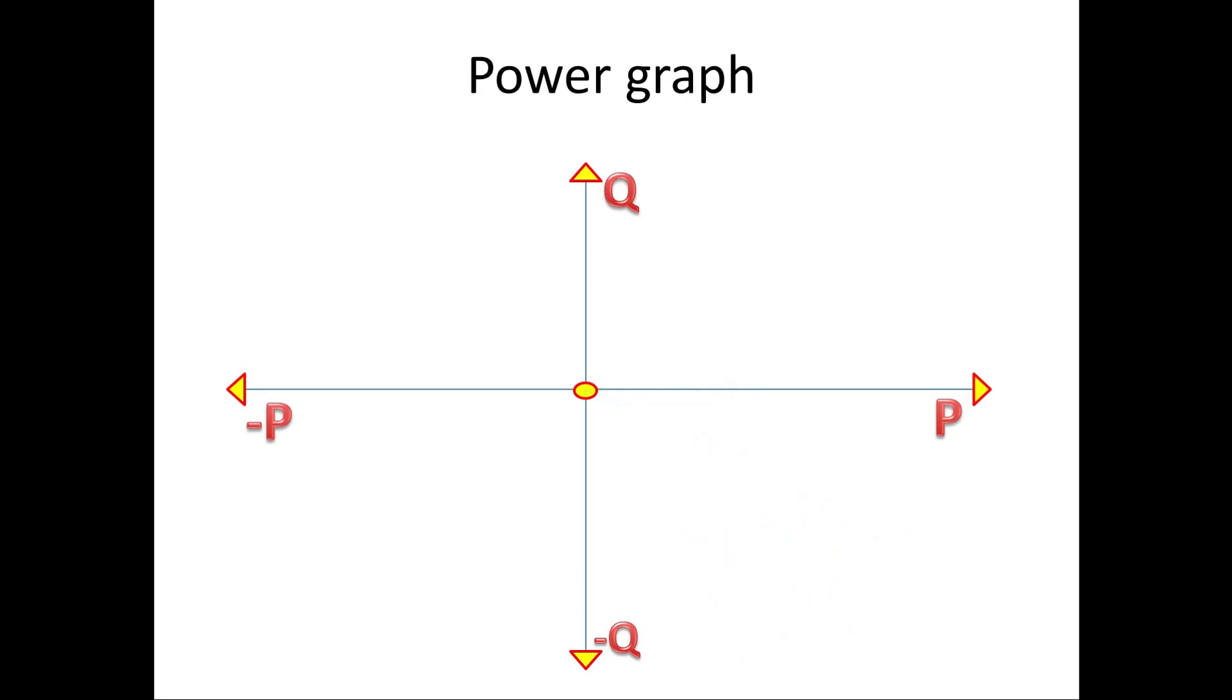Now we go for case 3. In this case, generator is in good running condition and exciter is also in good working condition. So it delivers VAR to grid. So Q is positive.